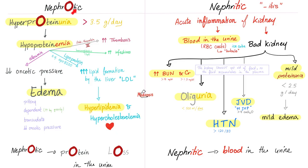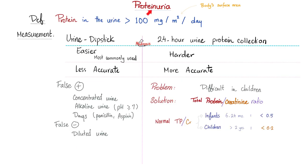Nephrotic syndrome has four features: high protein in the urine, low protein in the blood, edema, and hyperlipidemia. Proteinuria is protein in the urine, but nephrotic syndrome is not just proteinuria — it is significant proteinuria, more than 3.5 grams in a 24-hour period.